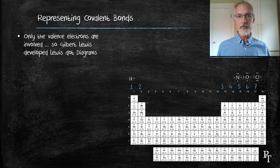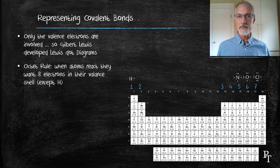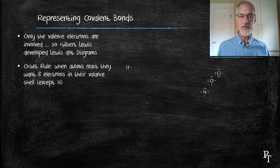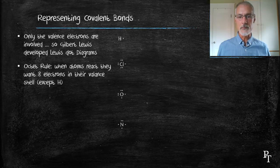In order to become stable, these atoms want to obtain the configuration of the nearest noble gas. In that case, they would like to obtain eight electrons, the exception of course being hydrogen, which would go on to resemble helium.